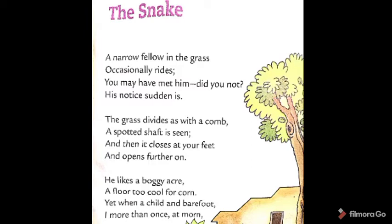A narrow fellow in the grass occasionally rides. You may have met him — did you not? His notice sudden is. The grass divides as with a comb, a spotted shaft is seen, and then it closes at your feet and opens further on. This is the first stanza.